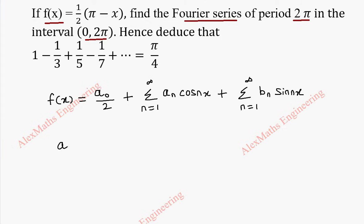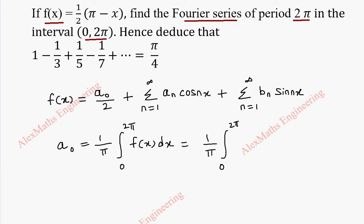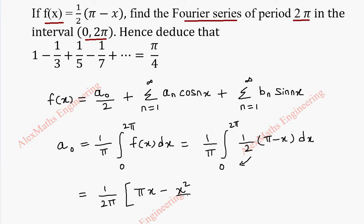As a first part, let's find a0. The formula is (1/π) ∫₀²π f(x) dx. This becomes (1/π) ∫₀²π (1/2)(π − x) dx. The constant 1/2 can be taken outside, giving (1/2π). The integration of π is πx, and the integration of x is x²/2. We substitute the limits: lower limit 0 and upper limit 2π.